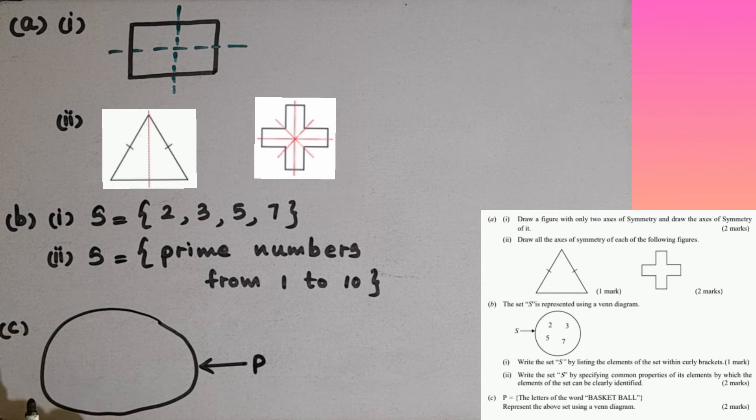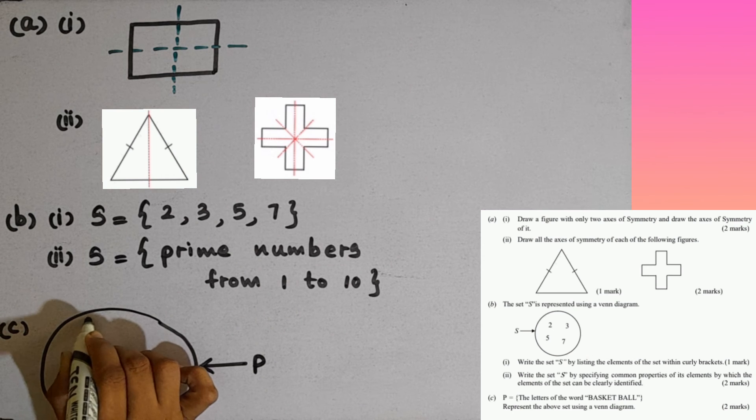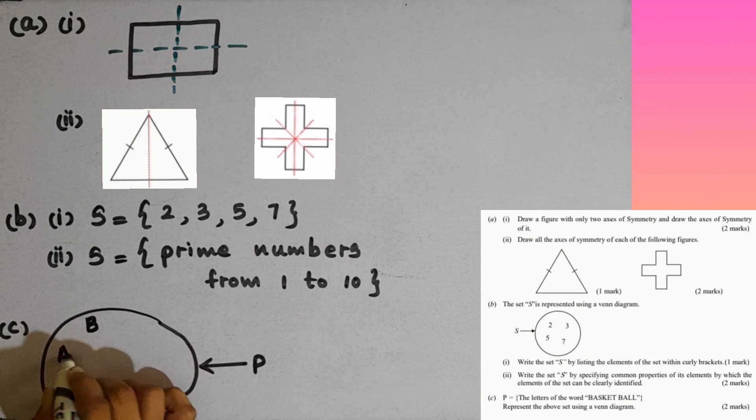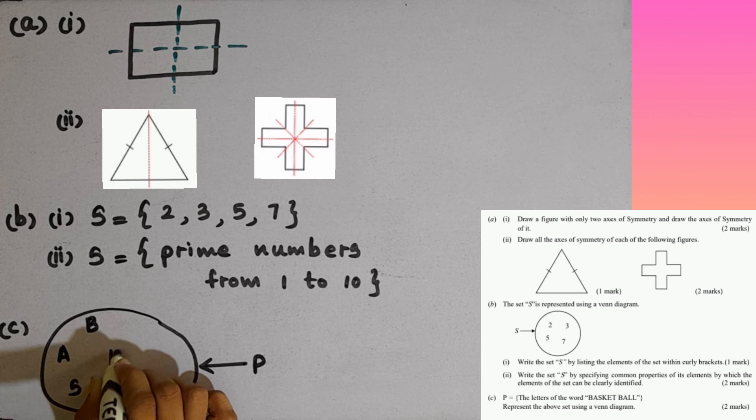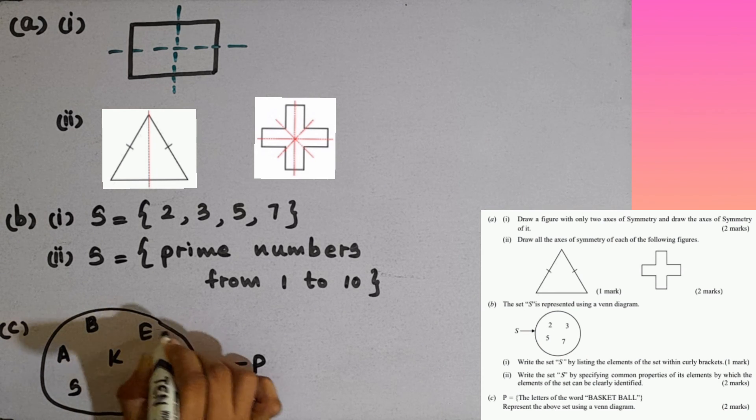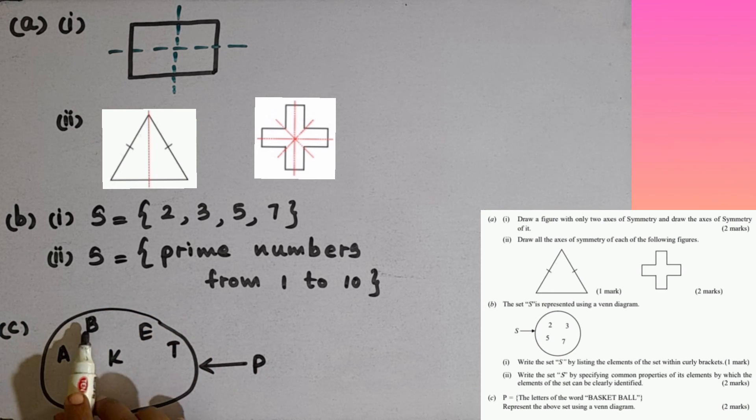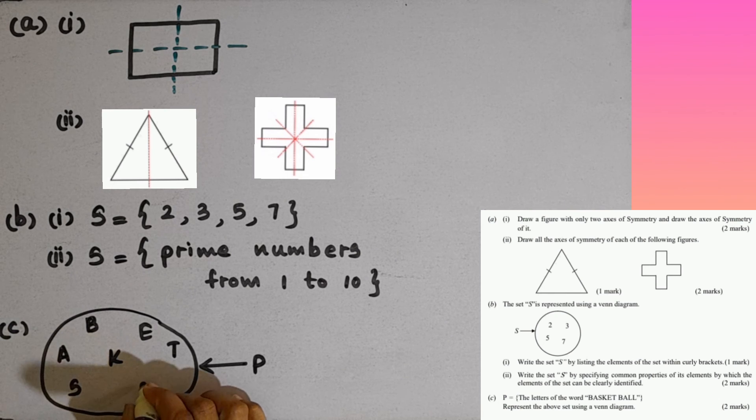Then what are the elements in this set? B, A, S, K, E, T. B you can't write again. A also you can't. Then L.